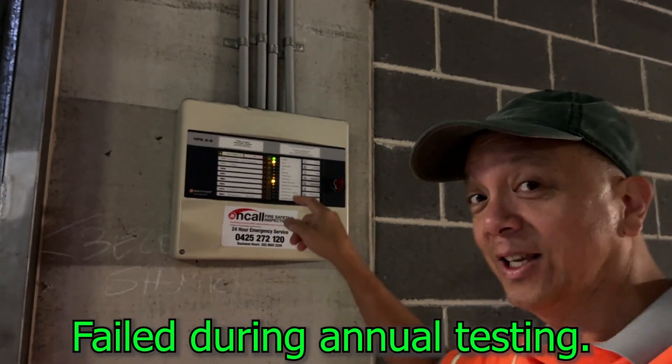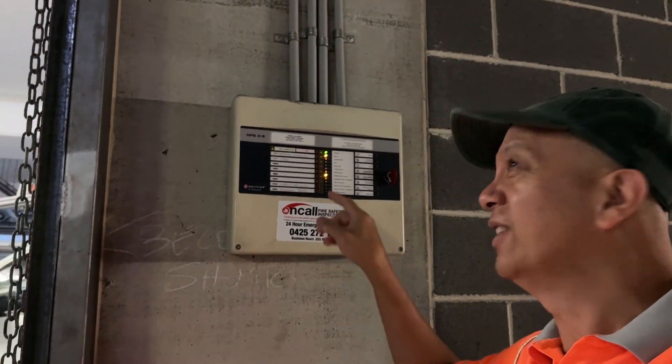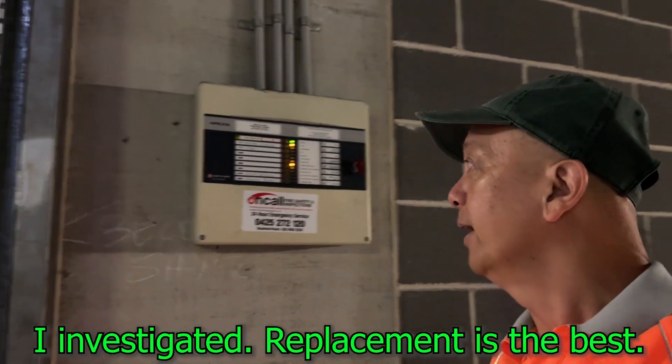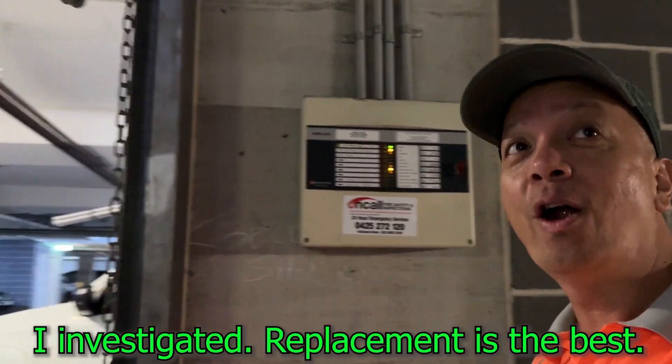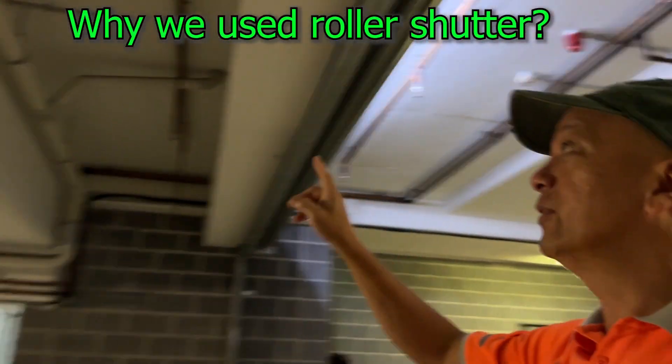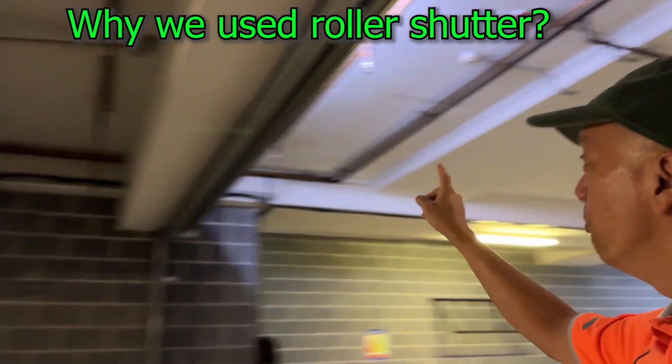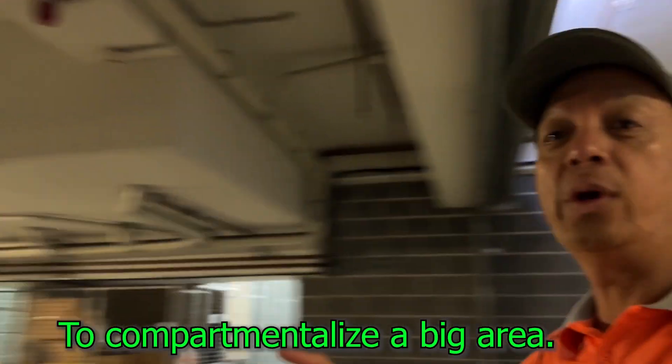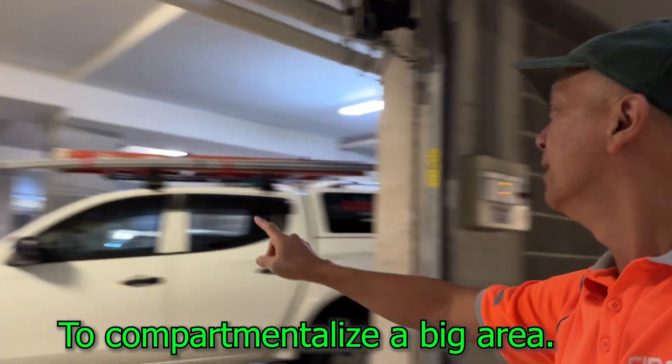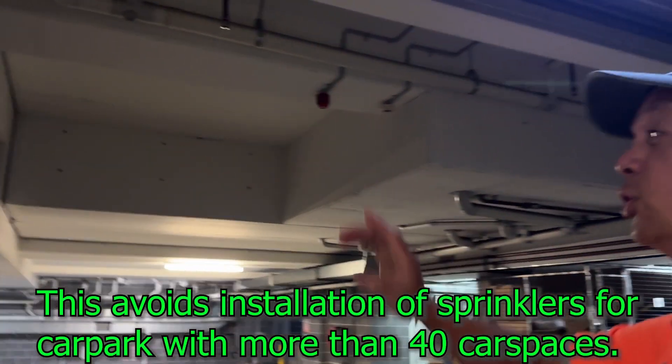This is only used for roller shutter. So this is the roller shutter. You have a detector and a sounder on the other side, on both sides I mean, as well as there's another one on the opposite side.